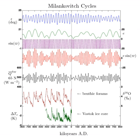Earth's current inclination relative to the invariable plane — the plane that represents the angular momentum of the solar system, approximately the orbital plane of Jupiter — is 1.57 degrees.